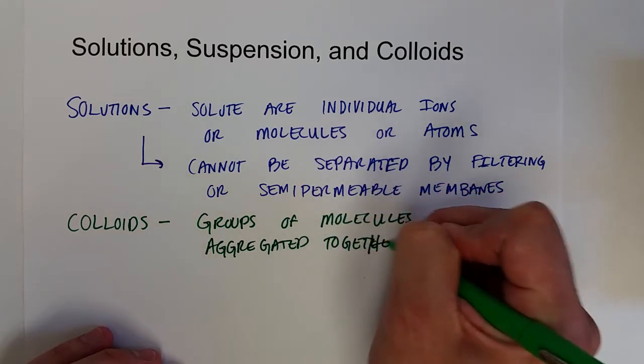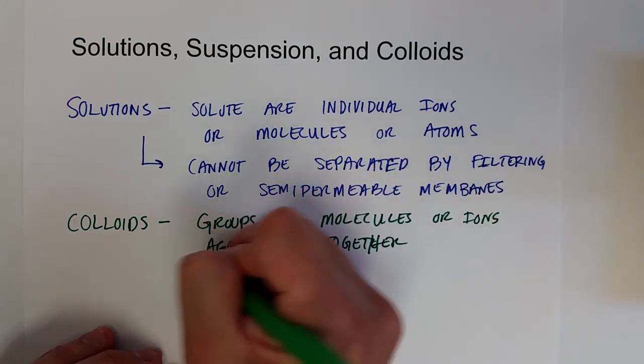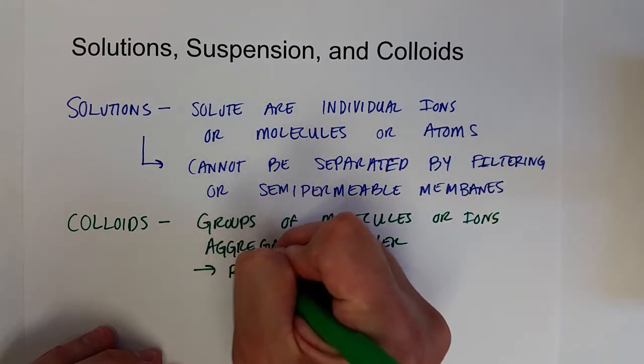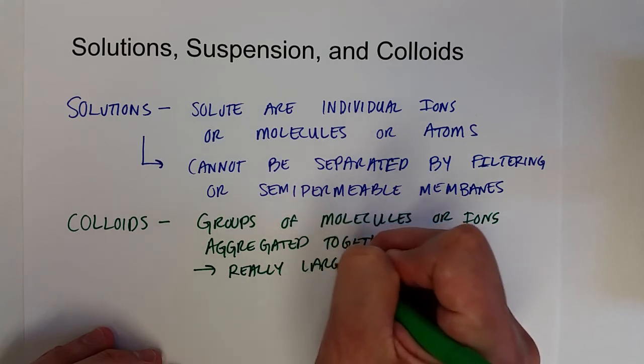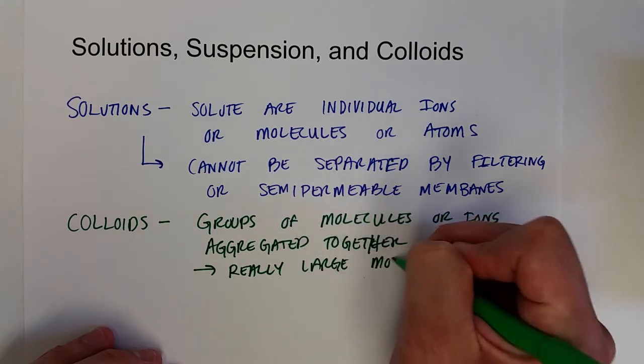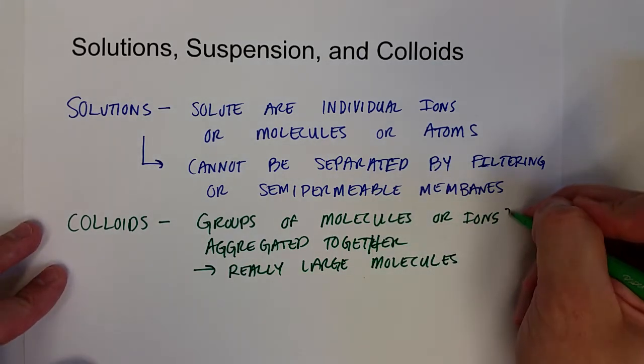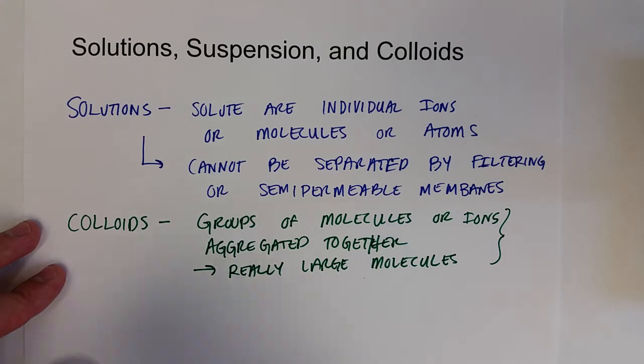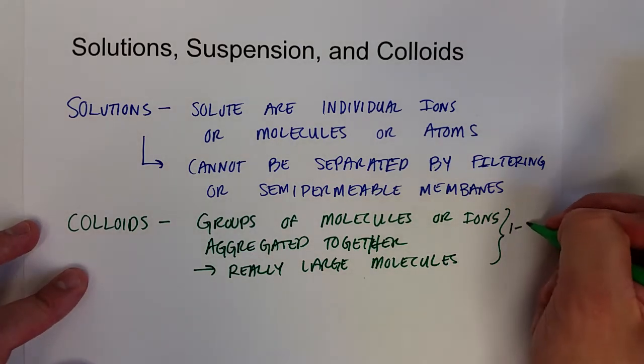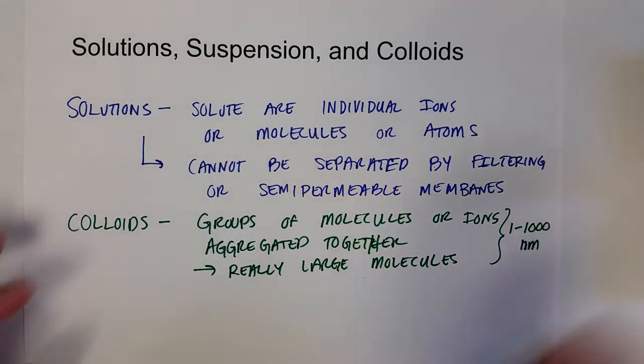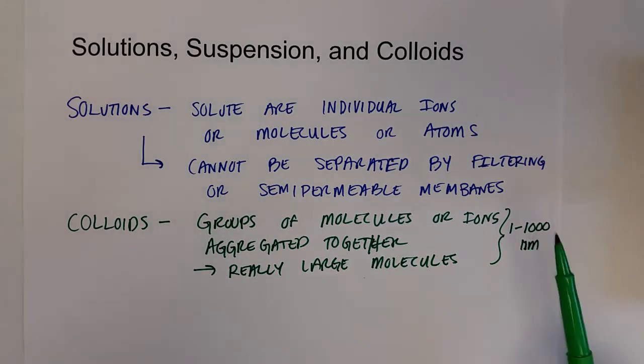Or another way that colloids can form is they can even just be really large molecules. And either of these, whether they're aggregated molecules or large molecules, the size of them is about 1 to 1,000 nanometers, which is 10 to the 9th nanometers in 1 meter. So quite large in terms of individual molecules or atoms, but still on a very small scale.